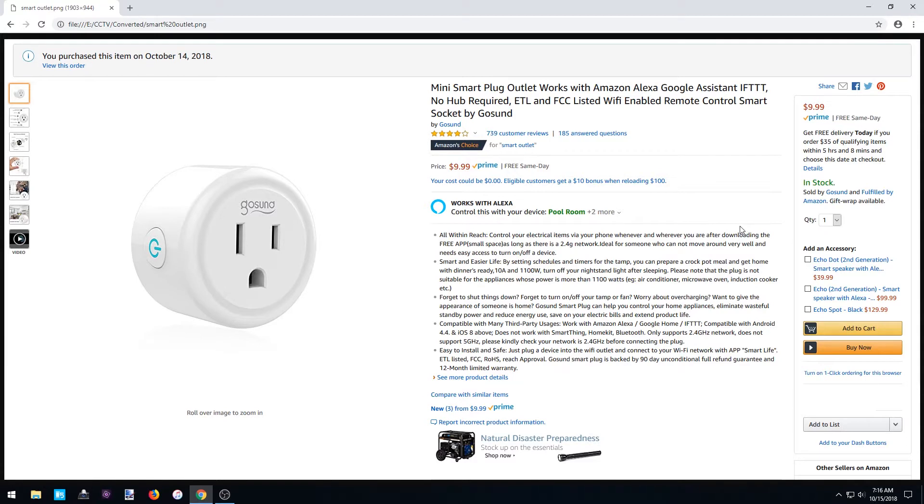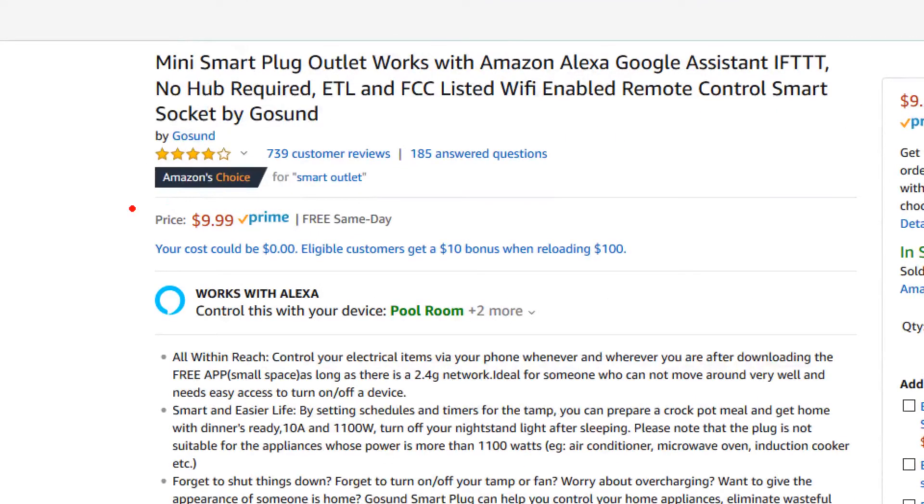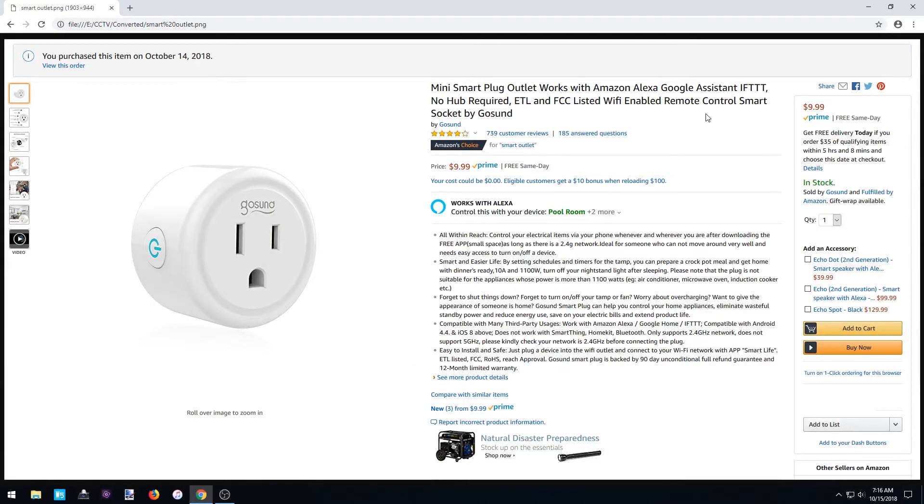That'll be the first topic. The second topic will be kind of background to that—setting up a smart outlet with the Smart Life app. The one we're going to use is made by GoSun and it's on Amazon for $9.99, one of the cheaper ones out there. I've had another one and it works well.